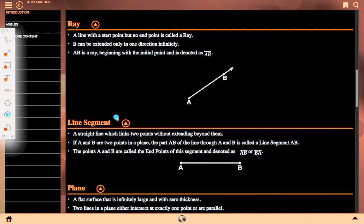Line segment: A straight line which links two points without extending beyond them. If A and B are two points in a plane, the part of the line through A and B is called a line segment. The points A and B are called the endpoints of this segment and denoted as AB or BA.